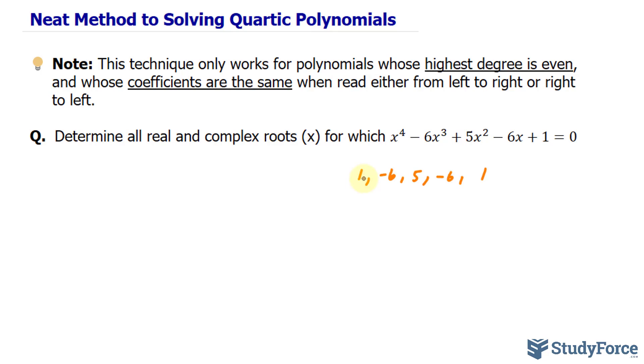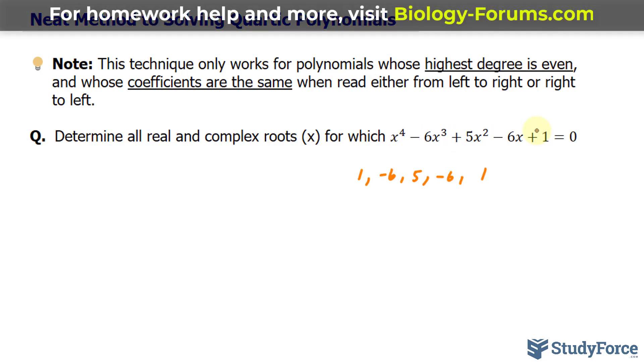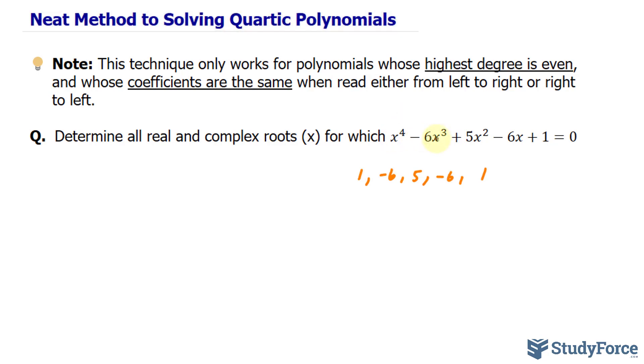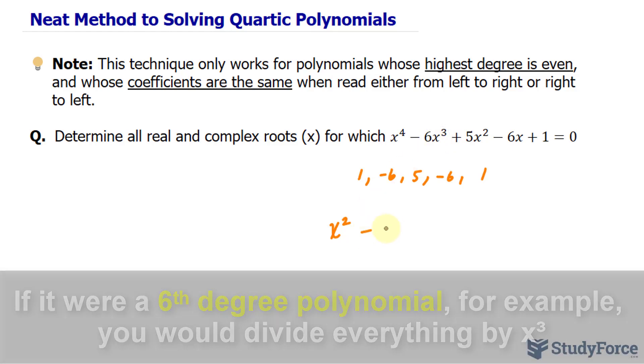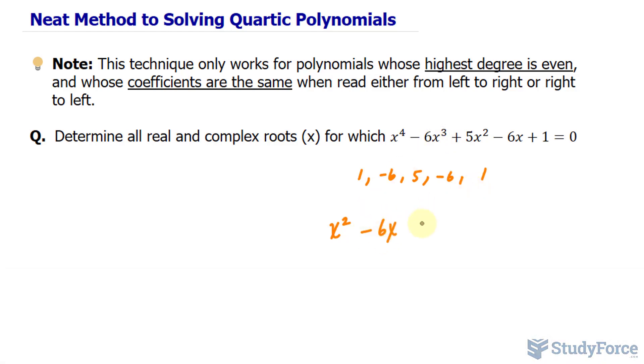The first thing I want to do is divide each term in this polynomial equation by x raised to a power that's half of the highest degree. In this case, four divided by two is two, so we divide each term by x². Here's what happens: we get x² - 6x + 5 - 6/x + 1/x² = 0.